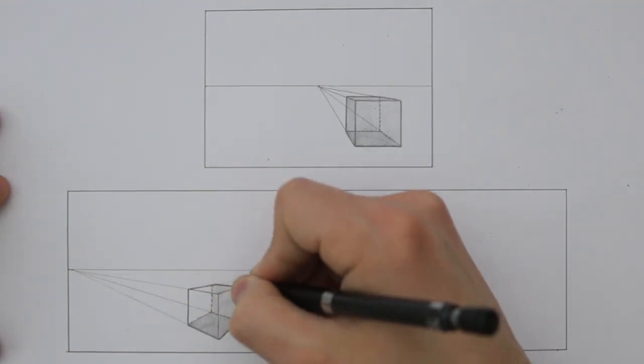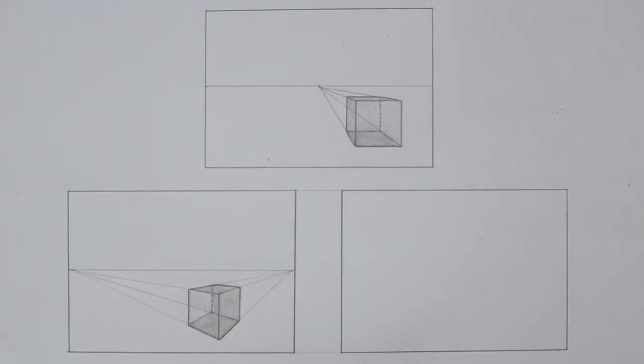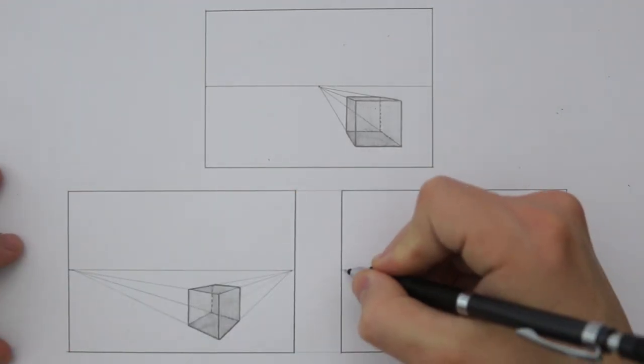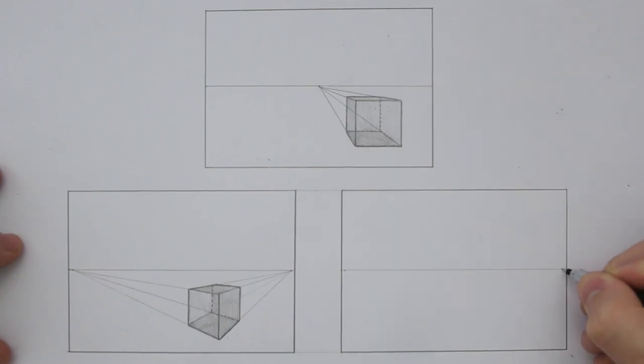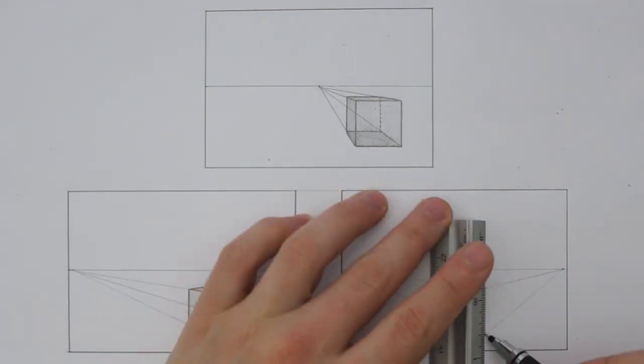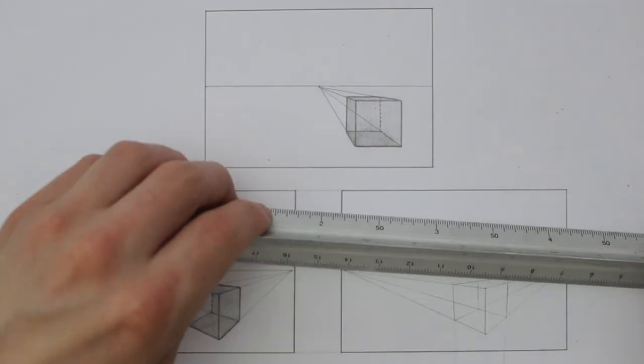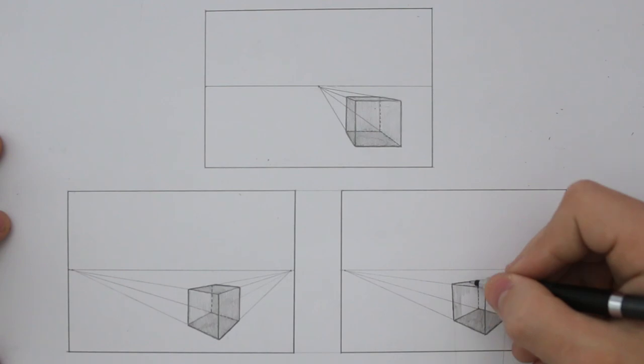Now for three point perspective, well we have two at either side of the horizon line and then we place one away from the horizon line. This might be confusing but we will cover it more in depth in a later episode. This is just an example of how vanishing points change the appearance of the drawing.